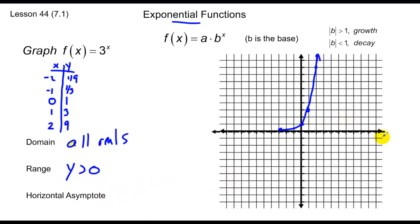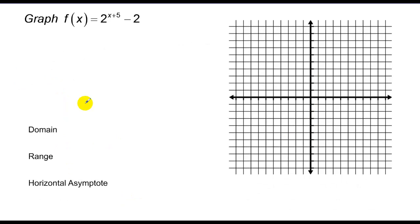So y has to be greater than 0 for my range. The horizontal asymptote, as we already stated, is this horizontal line of y equals 0.